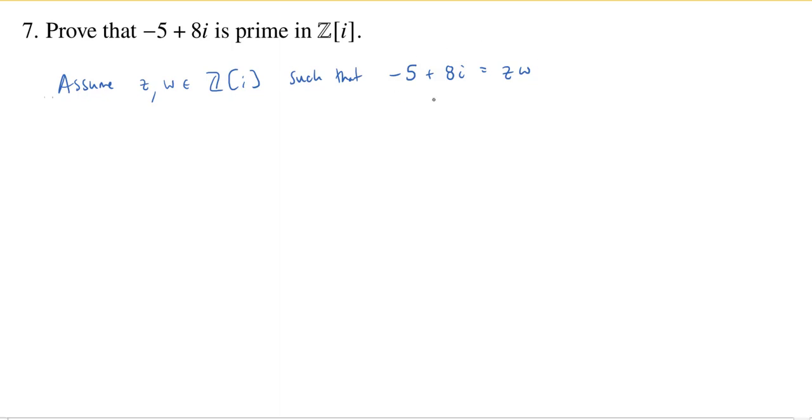So what we're going to do is take the norm of both sides. The norm of negative five plus eight i is just going to equal negative five squared plus eight squared, which is 64 plus 25, equals 89.